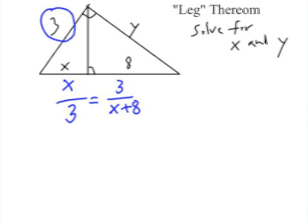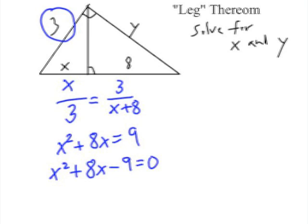Now we're going to have to cross multiply and get X squared plus 8X equals 9. Subtract 9 from each side, which gives us our quadratic equation. X squared plus 8X minus 9 equals 0. Go ahead and try to factor this.